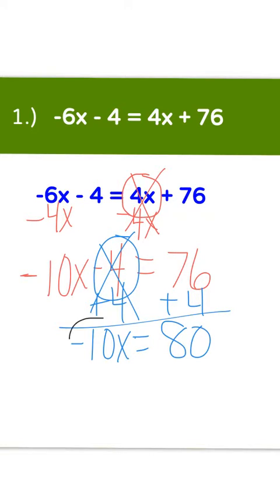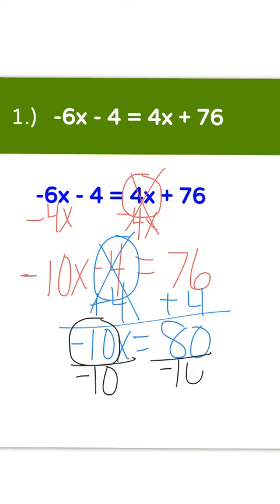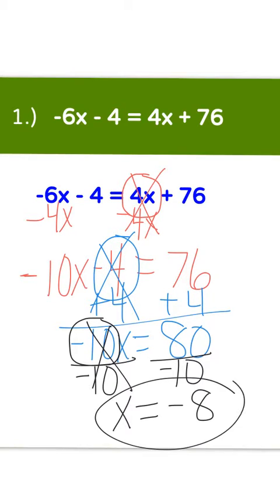Now we need to get rid of the negative 10 that's with the x. It's being multiplied, so the inverse operation is to divide by negative 10. That leaves us with x equals — a positive divided by a negative is a negative, and 80 divided by 10 is 8. Your answer is x equals negative 8.